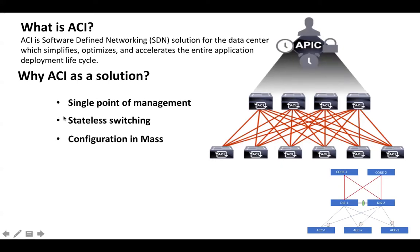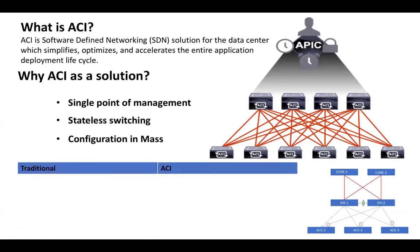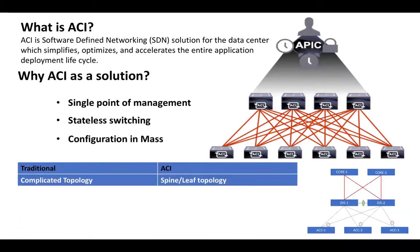Let's compare the traditional way of networking with ACI further. In traditional networks, we had a three-tier architecture — access, distribution, and core — which is comparatively complicated compared to spine-leaf architecture. In ACI, we use a spine-leaf topology, which provides predictable traffic flow: traffic goes to leaf, then spine, then another leaf. Spine-leaf provides deterministic bandwidth and latency, ECMP, and layer 3 connectivity between spine and leaf — meaning no STP in the ACI fabric.